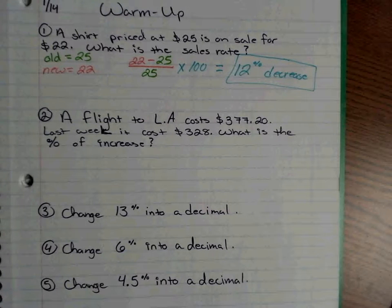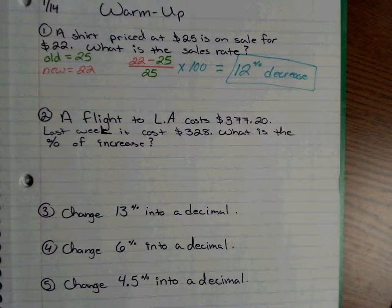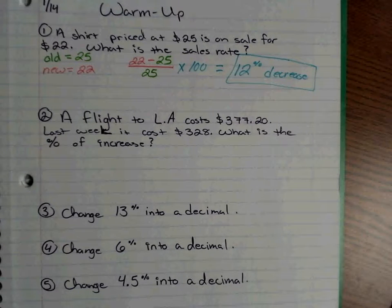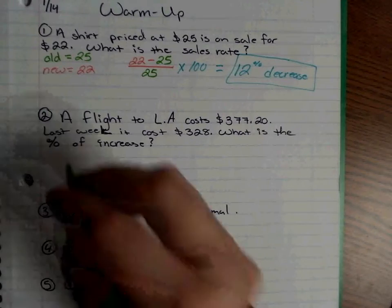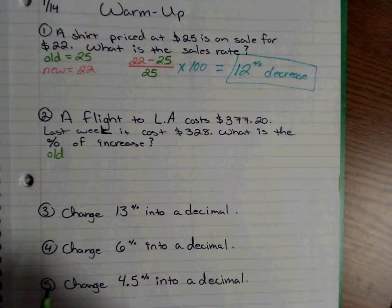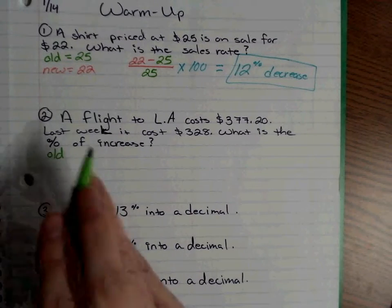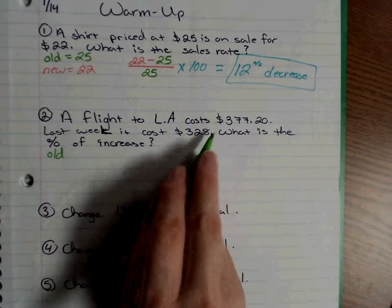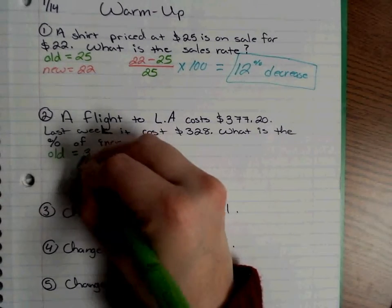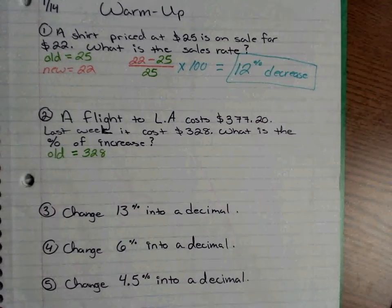Problem number two: a flight to LA costs $377.20, but last week it cost $328. What is the price increase? Manuel said negative 13%, Danae said 15%. You have to remember you're talking about the old and the new — the old price was $328. Last week it cost $328; right now it costs $377.20, but the old was $328.